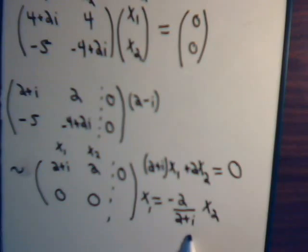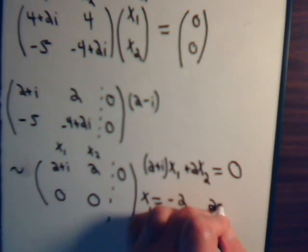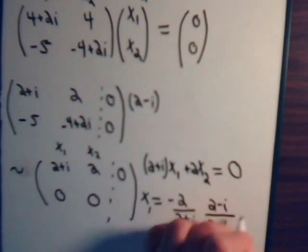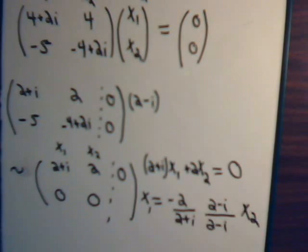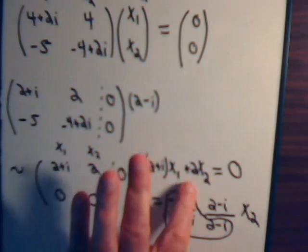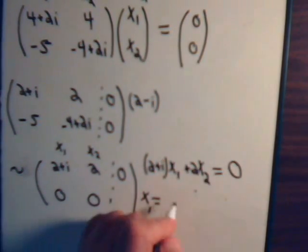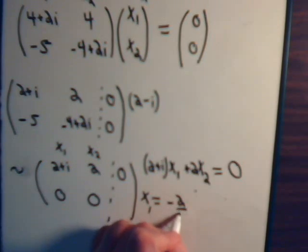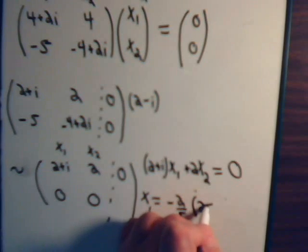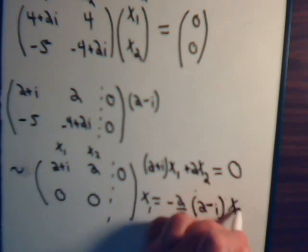Okay, here we can rationalize this, multiply top and bottom by 2 minus i. And this is 5. So, we have x1 equals minus 2 fifths 2 minus i times x2. So, this whole part here is just minus 2 fifths.